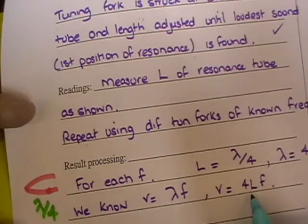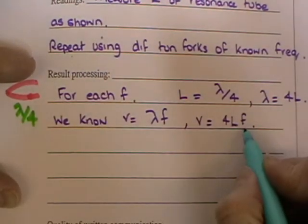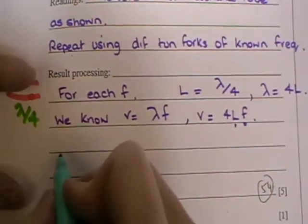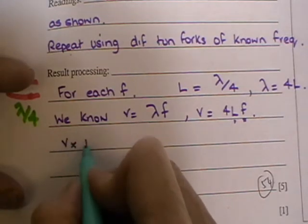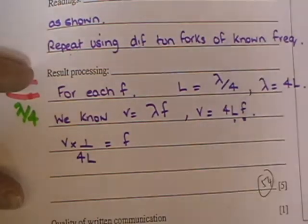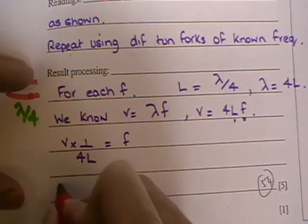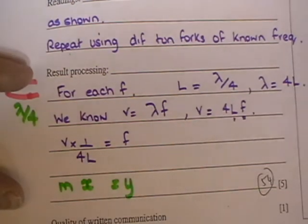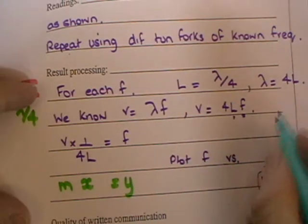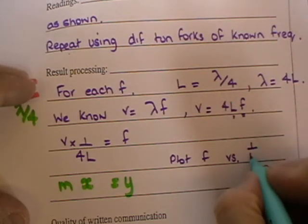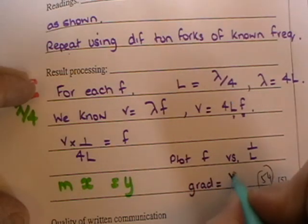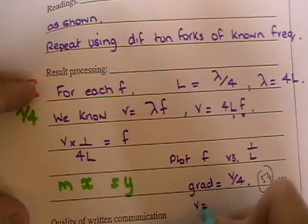And if we plot a graph, if we rearrange this first, and we put F, we'll know F and we'll know L, so we need one of those on the X axis and one on the Y axis. And so if we rearrange that to have V multiplied by one over 4L, that's just dividing V by 4L, it's the same thing. And I write Y equals MX underneath that. Then if we plot F versus either one over 4L or one over L, then the gradient of the graph is equal to V over 4, and therefore V is equal to four times the gradient.